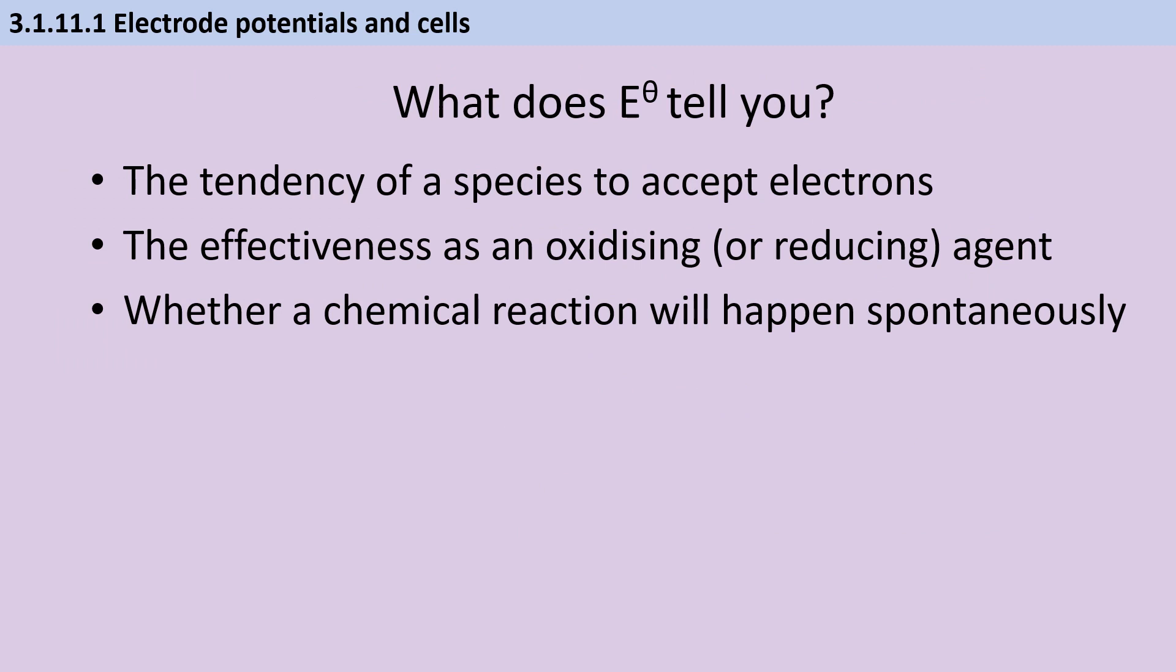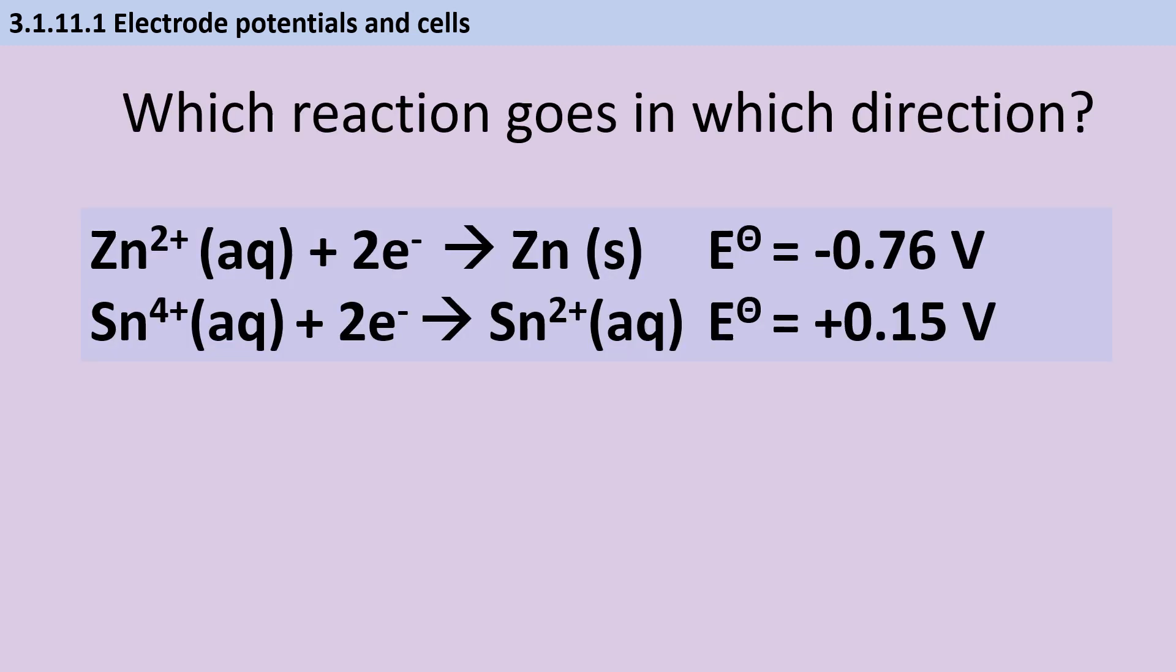The standard potential for a half-cell tells you about the tendency of a species to accept electrons, and therefore its effectiveness as an oxidising or reducing agent. We can use this in order to figure out whether a chemical reaction will happen spontaneously. If we want to form an electrochemical cell or make a prediction about a redox reaction, then one of these reduction potentials is going to need to be turned around to make an oxidation potential. The rule is that we look at the E-values, and the equation that has the more positive E-value will proceed in the forward direction, whereas the equation with the less positive E-value, whether that's positive or negative, will be reversed. This then allows us to put together the two equations.